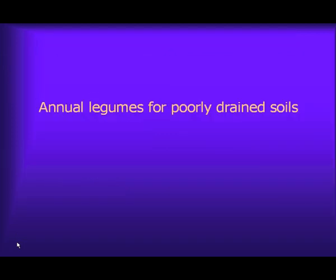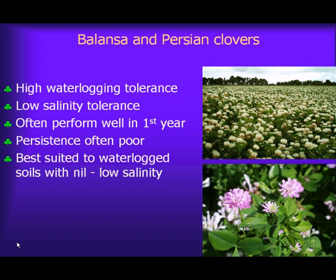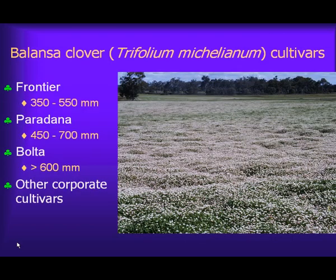For annual legumes on poorly drained soils, balancer and Persian clovers are the key species. They have waterlogging tolerance, but glasshouse studies show they haven't got very good salt tolerance — they are better than sub clovers but nowhere near as good as the bird medics. They can perform quite well in the first year but their persistence is often poor, so they're best suited to waterlogged soils with low salinity levels. Of the balancer clover cultivars, there are three: Frontier for medium rainfall areas, Paradana for medium to high rainfall areas, and Boulder for high and very high rainfall areas, plus some more recent cultivars from other seed companies.